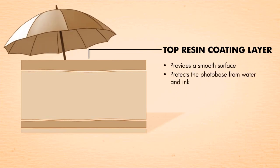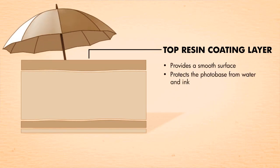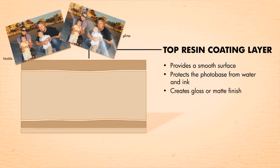Next, for a smooth surface and protection from water and humidity, another resin coating layer is placed on top of the photo base. This layer is also responsible for the paper's gloss or matte finish.